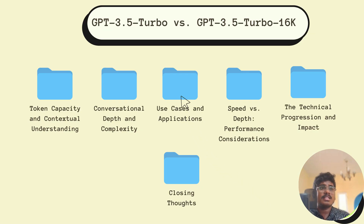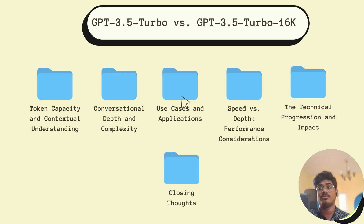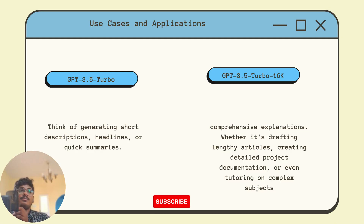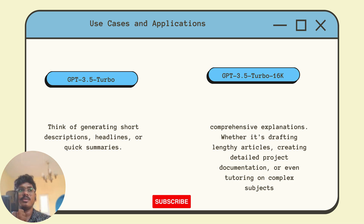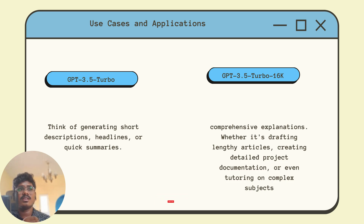Now let's explore the diverse use cases these models cater to. GPT-3.5 Turbo is your go-to when you need concise output — think generating short descriptions, headlines, or quick summaries. Meanwhile, GPT-3.5 Turbo 16k shines for tasks requiring comprehensive explanation.